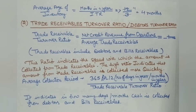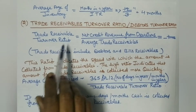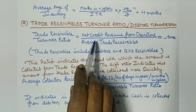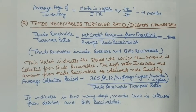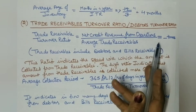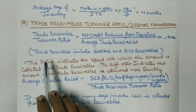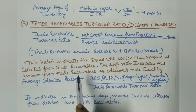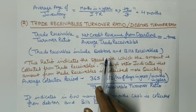This is why these activity ratios are important. Next, we will discuss the trade receivables turnover ratio. The formula for trade receivables turnover ratio is: net credit revenue from operations (net credit sales) divided by average trade receivables. Trade receivables include debtors and bills receivable, and we take their average.